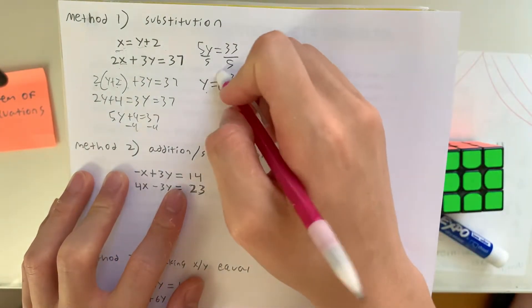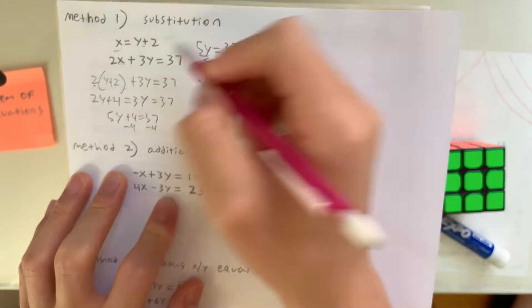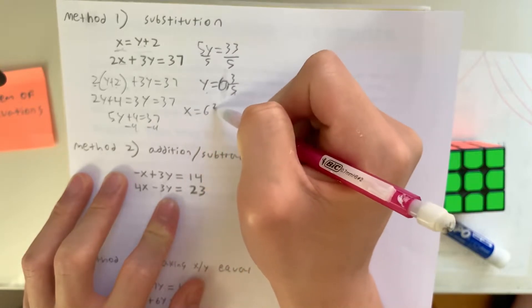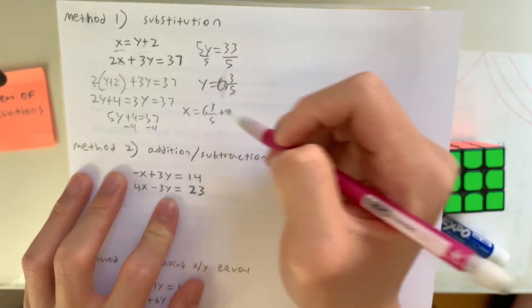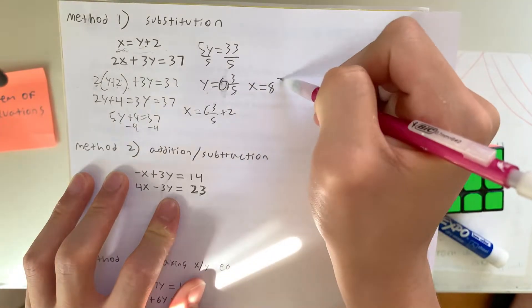And now we can plug in the value of 6 and 3 fifths into here, giving us x equals 6 and 3 fifths plus 2, meaning that x equals 8 and 3 fifths. So these are our two answers, and that's how you do the first method.